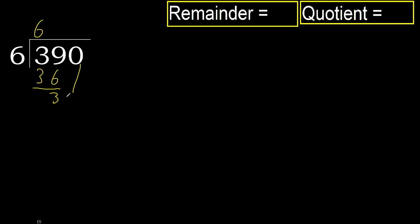Next, bring down 30. 6 multiplied by 5 is 30, which is not greater. 30 minus 30 equals 0.